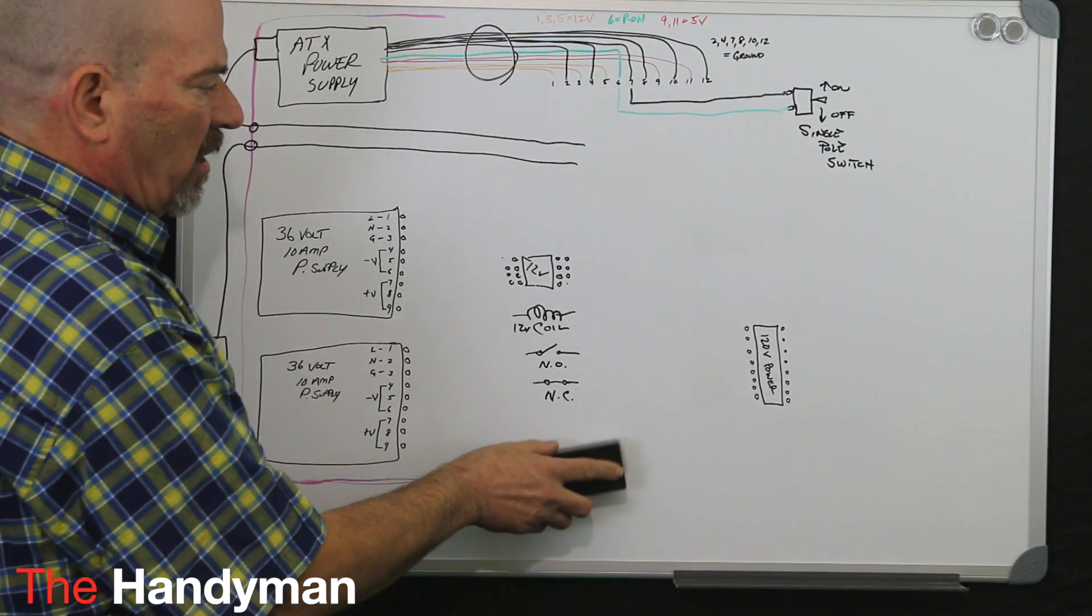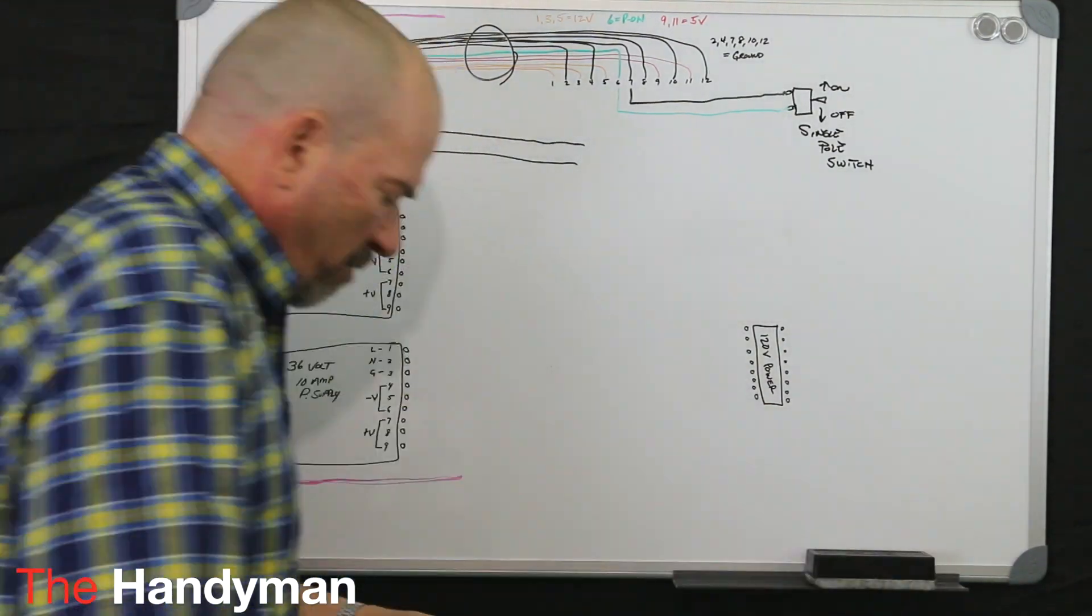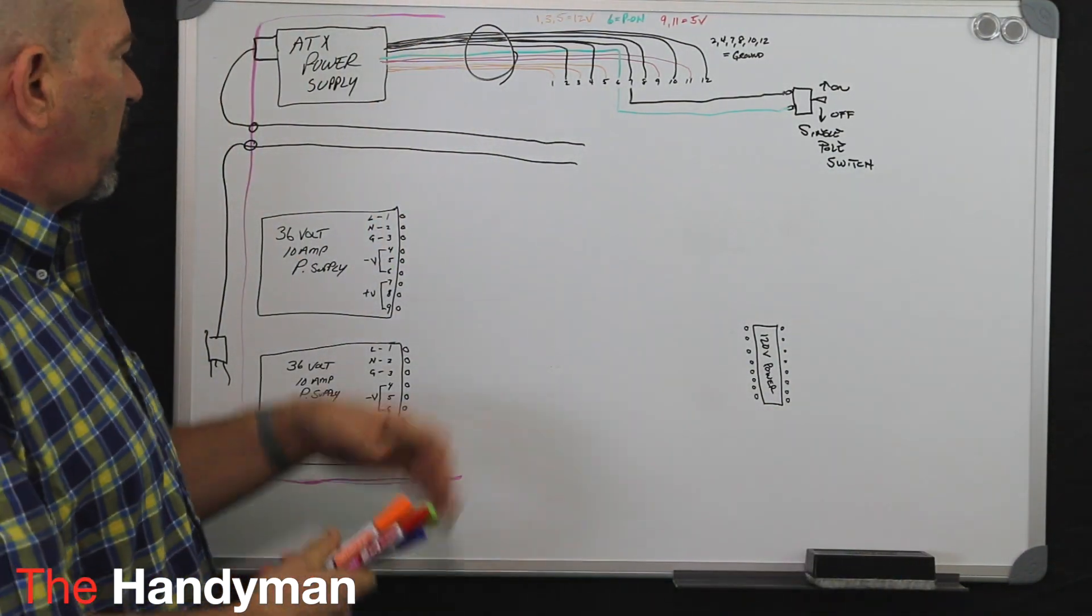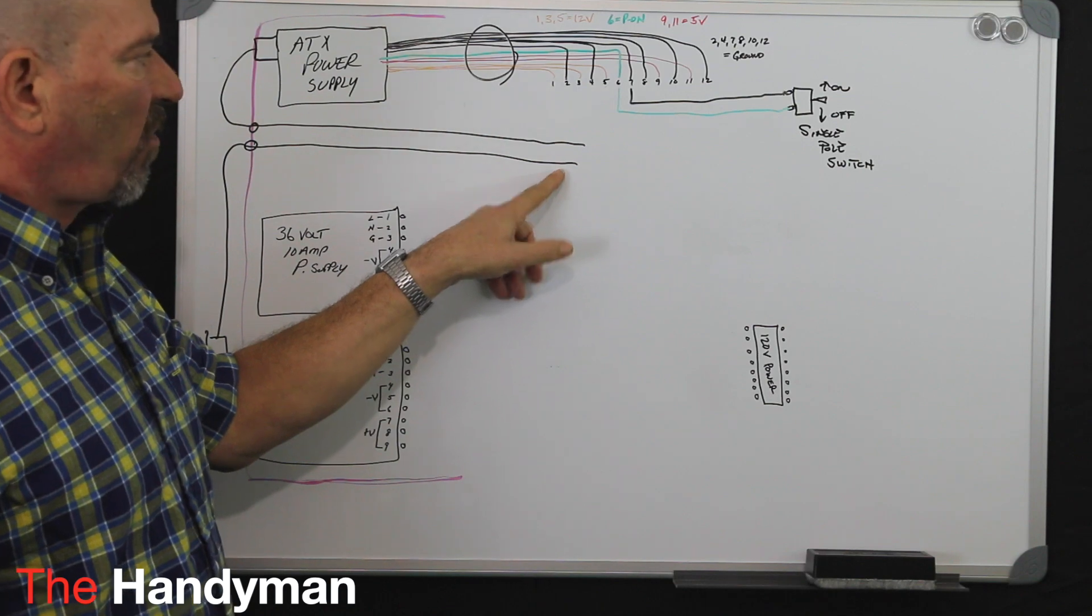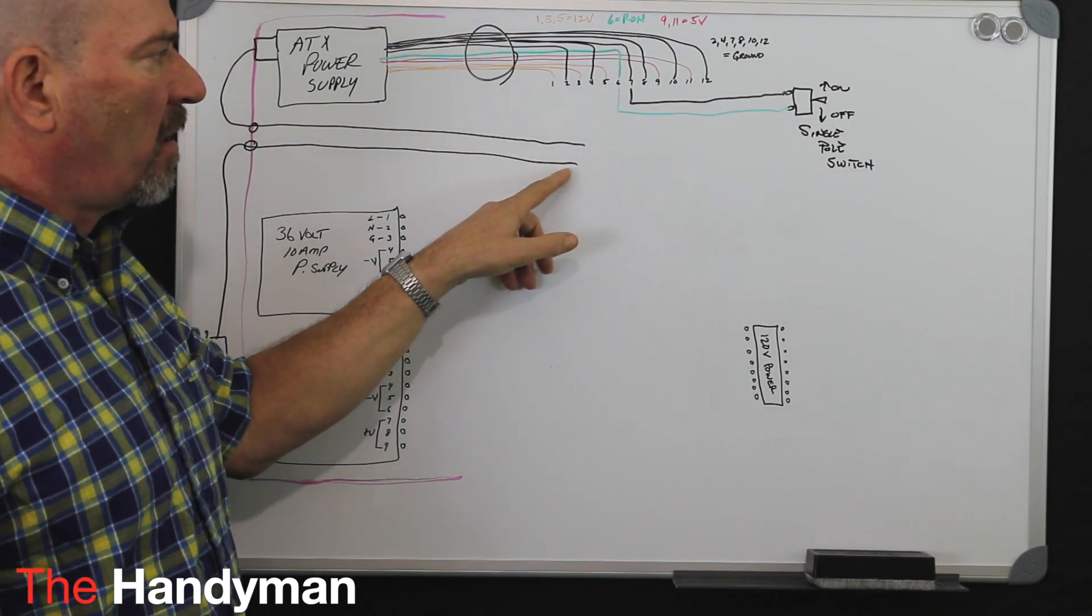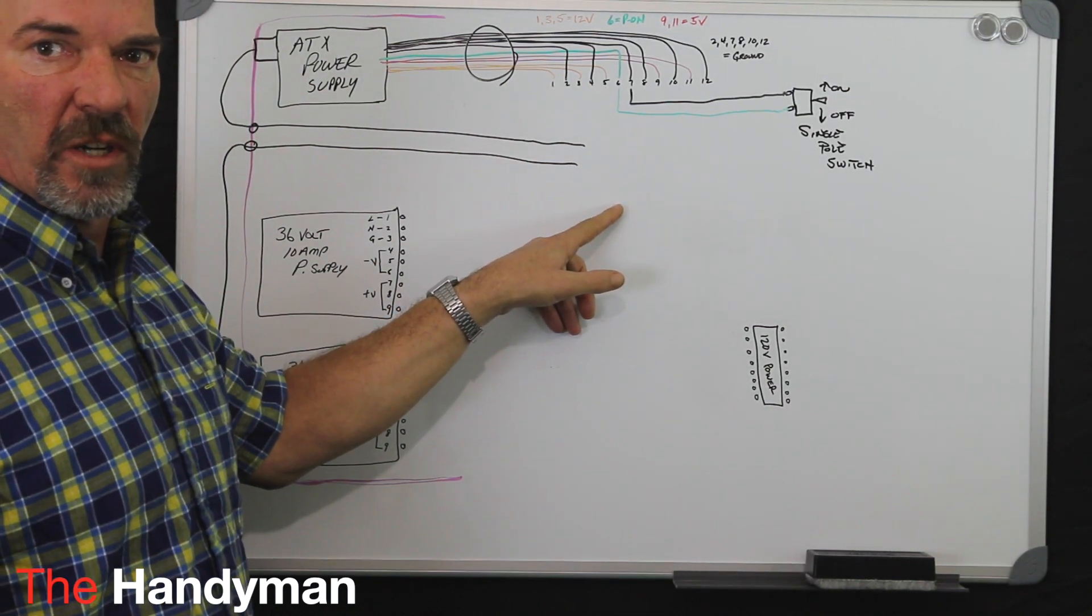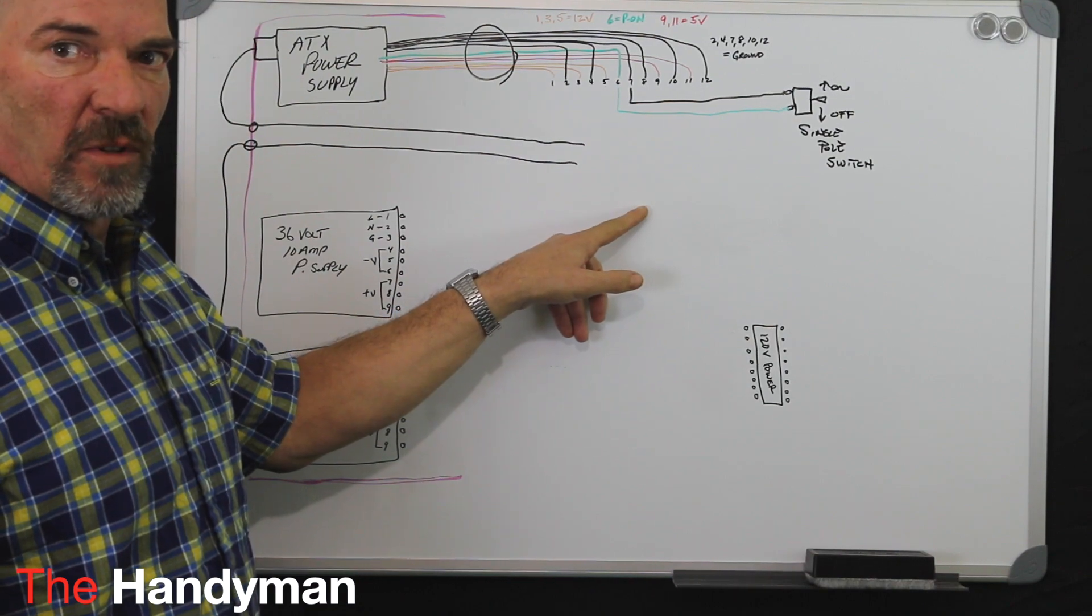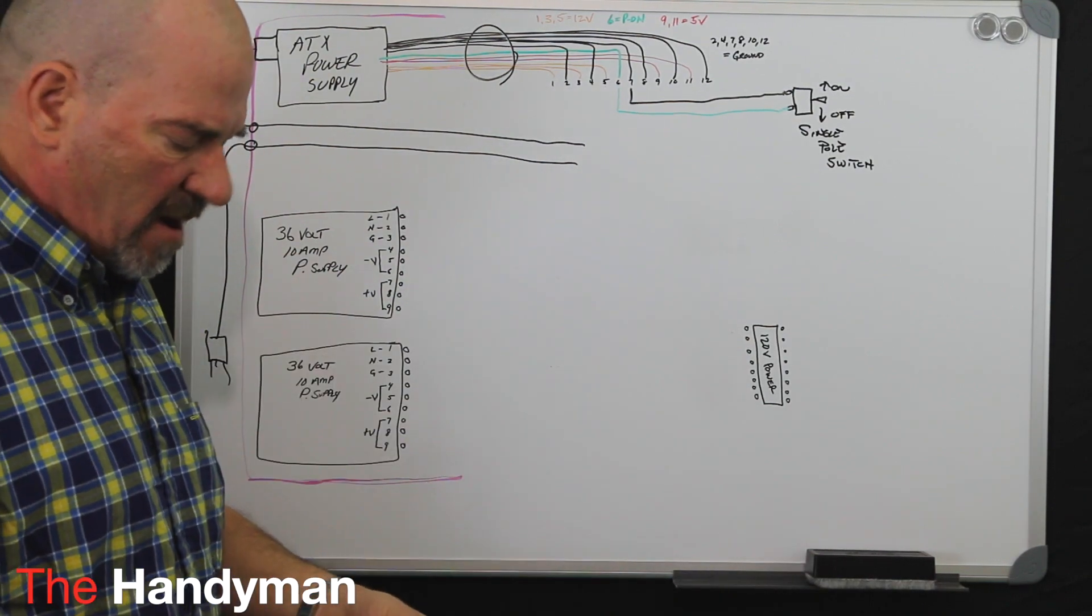So what we're going to do is we're going to get rid of this. Because your next step is, you need to take these two cables, which have three wires in each one for your power, and they're going to hook directly to your 12-volt relay. And I'll explain that now.